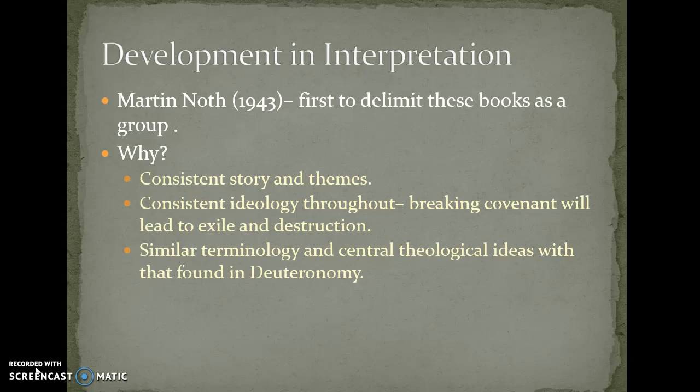There were also similar ideas — not only an ideology, but a political ideology. Similar phrases, you could even say bumper sticker taglines, went throughout the Deuteronomistic history, in particular on the emphasis of the monarchy. Breaking the covenant will lead to exile and destruction, even at times when the exile was not in focus. And the terms, the language, and the central theological ideas found in Deuteronomy — such as God having a loving relationship with Israel, God having a marriage with Israel — are descriptions of the covenant not found elsewhere in the Torah, but explicitly in Deuteronomy, and these ideas carry forward in these books from Joshua to 2 Kings.